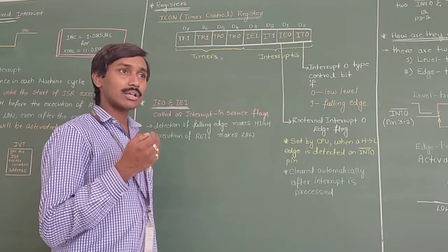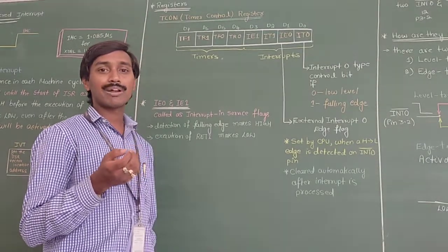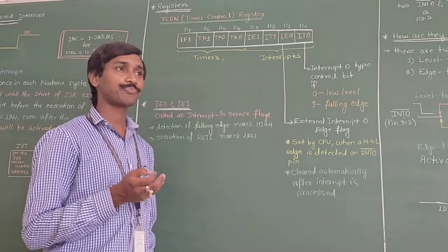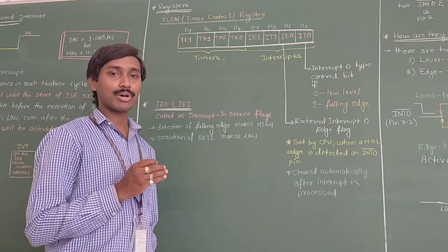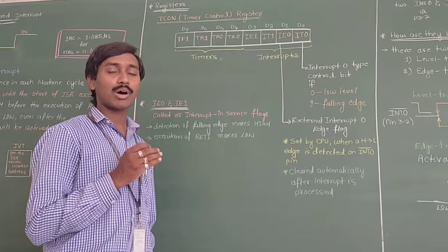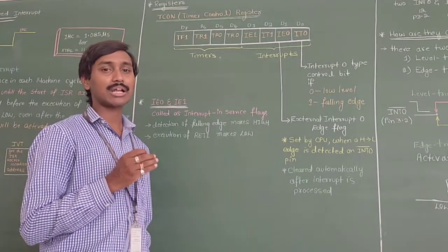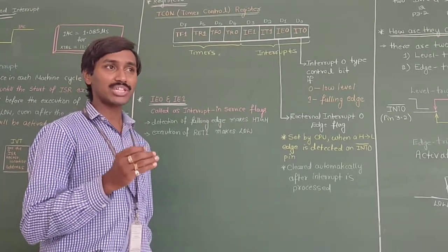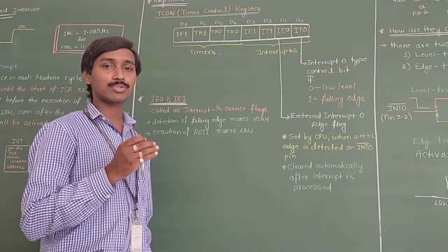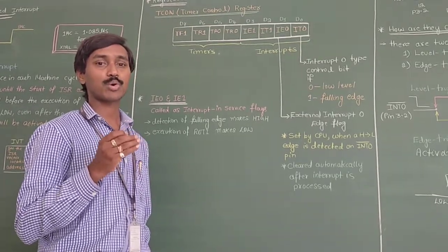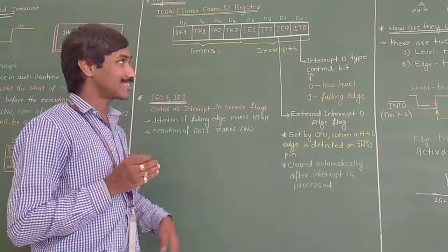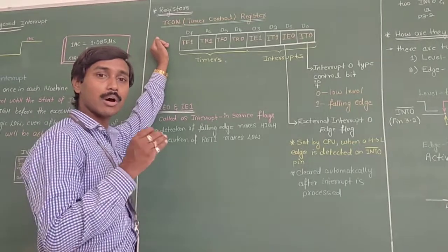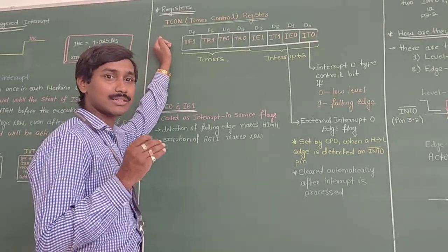So how do we decide between level triggered or edge triggered interrupt, and what is the default mode in 8051? On reset, by default the external hardware interrupts in 8051 are level triggered. To change level triggered interrupts into edge triggered interrupts, we program the Timer Control Register, which we have already discussed in the previous module while covering the timers chapter.